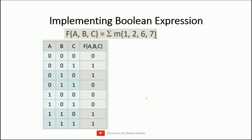Now I'll implement a boolean function using the 74153 IC. The example is: implement Σ(1, 2, 6, 7). The first step is to write the truth table. With three variables A, B, C, there are eight combinations. Minterms 1, 2, 6, and 7 are assigned output value 1, while the remaining minterms are assigned 0.